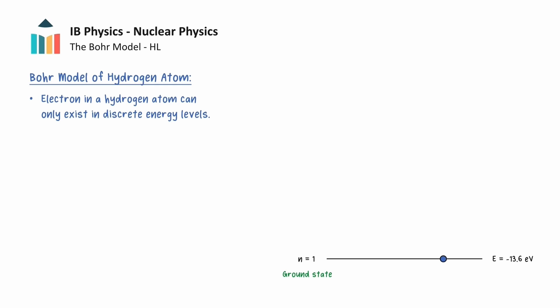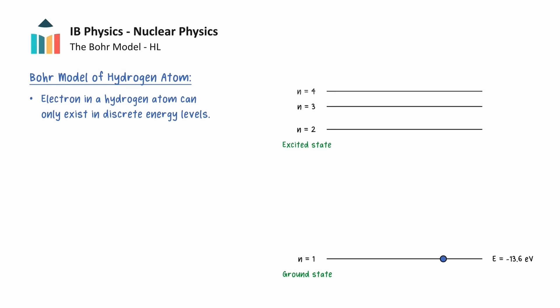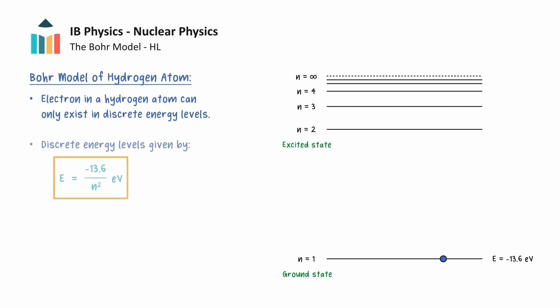There are also higher energy levels where n equals 2 represents the first excited state, n equals 3 represents the second excited state, and so on. The total energy at each level in electron volts can be calculated by the following formula, where n represents the principal quantum number.